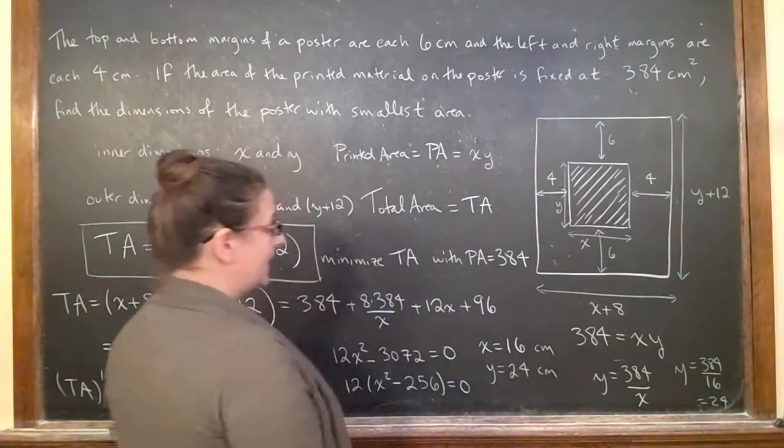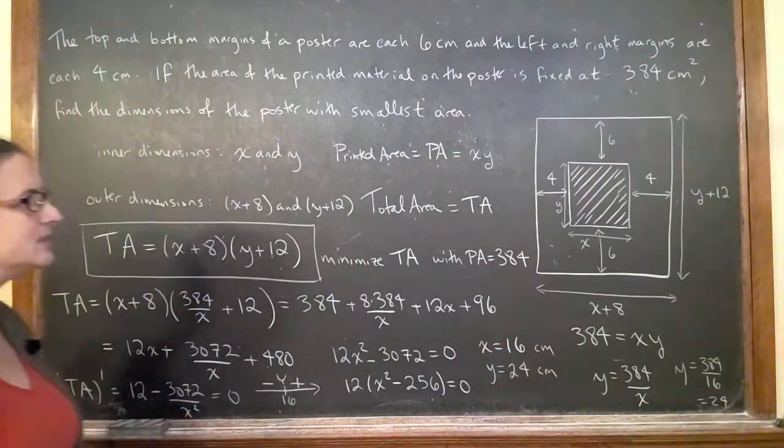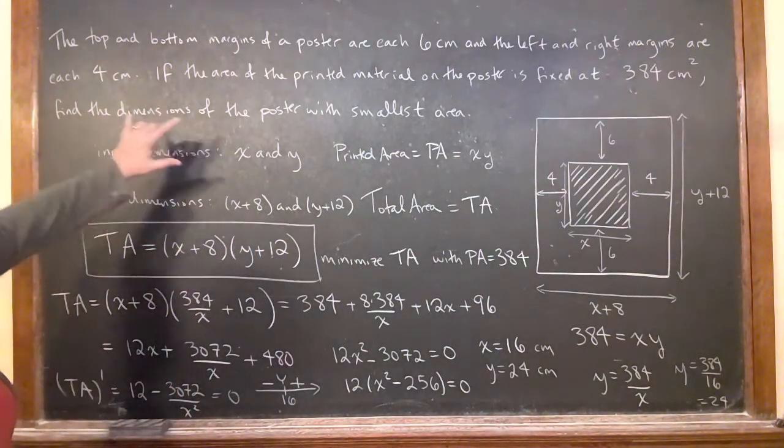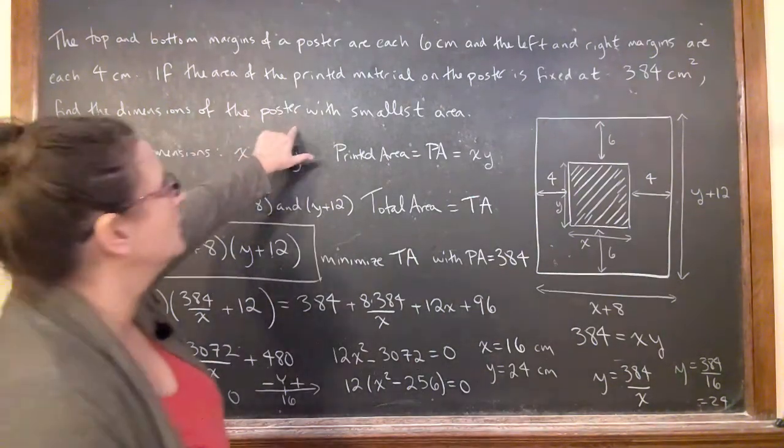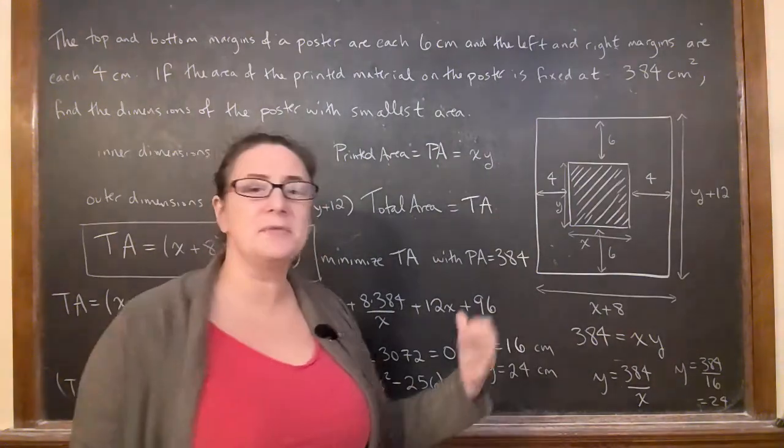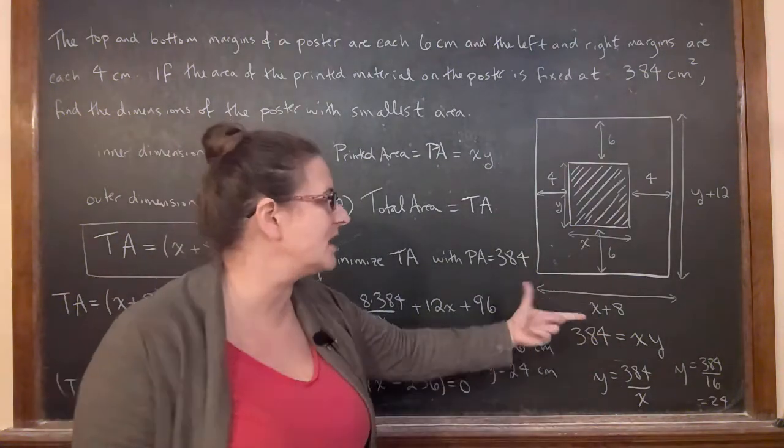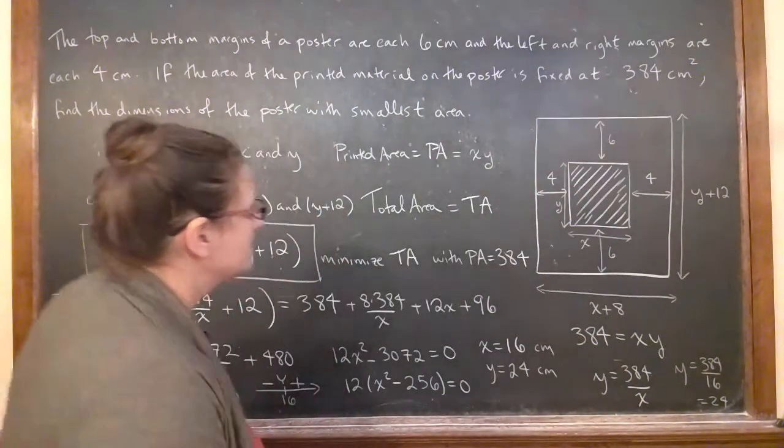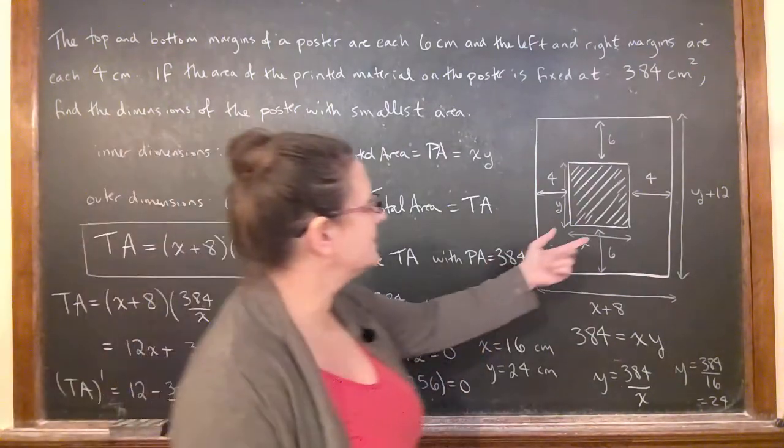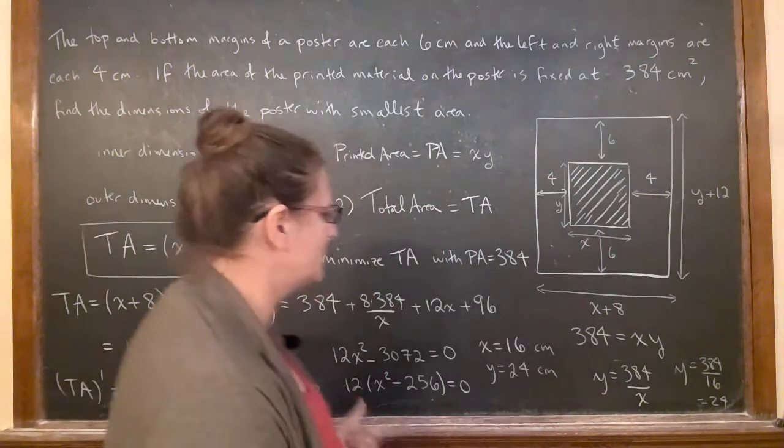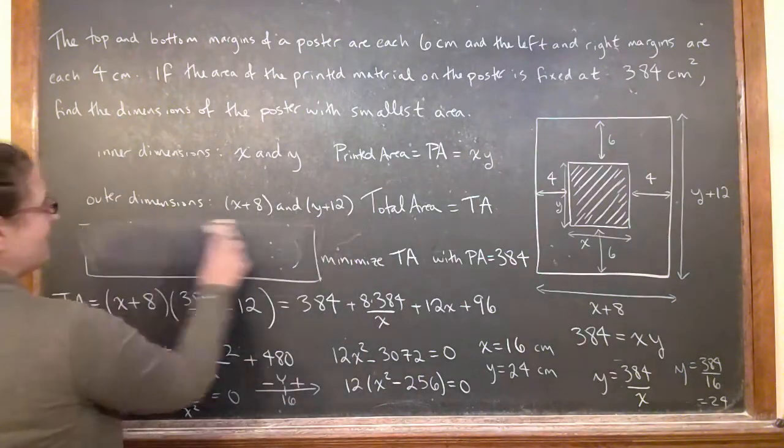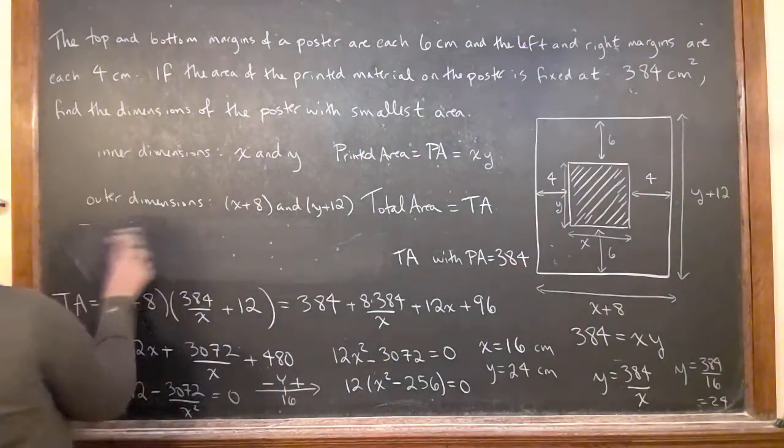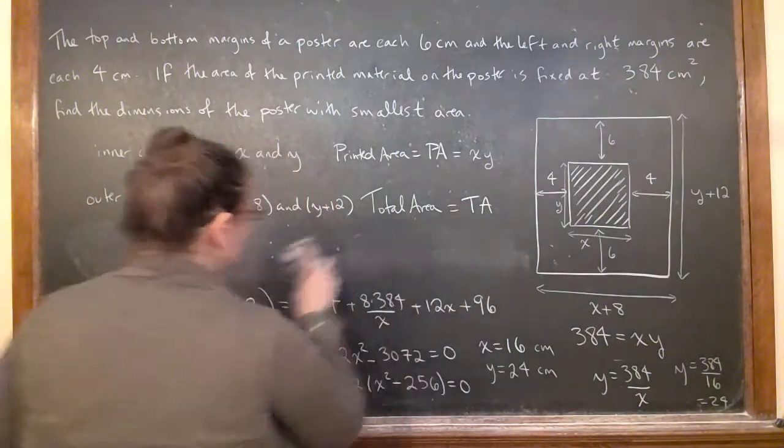But wait, am I done? I found my x and my y, but if I go back and double check, it's asking me to find the dimensions of the poster with smallest area. So what they really want is the outside dimensions. We found the inside dimensions, which is fine, because then all we have to do is add for the outside dimensions.